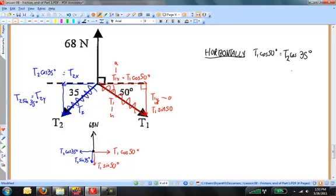Likewise, I can write a vertical equation. The upward force has to be equal to the sum of the two downward forces. 68 Newtons is going to be equal to T2 sine of 35 plus T1 sine of 50.